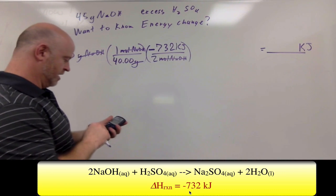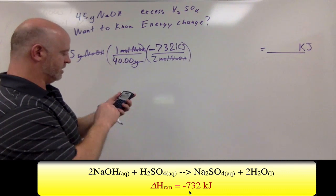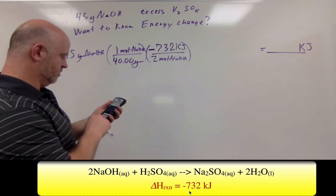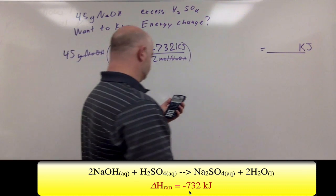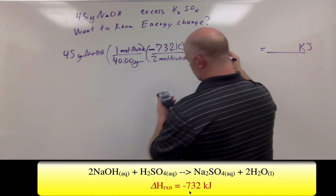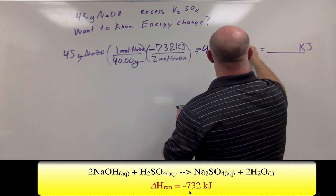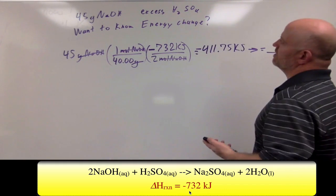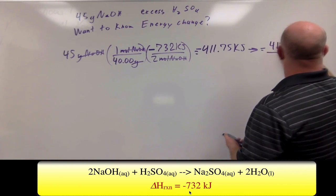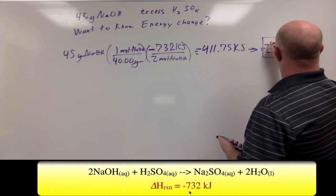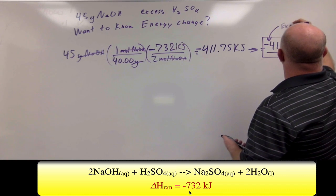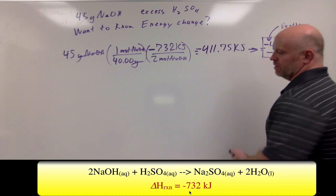So if we do that, I take my 45 divided by 40, and then take it times a negative 732, and divide that by 2, and I get a negative 411.75 kilojoules. And then I want to round this to the right significant figure, so I only had two significant figures up here, so my answer is going to be 410 kilojoules, and it's got to be negative. This is representing it being exothermic.